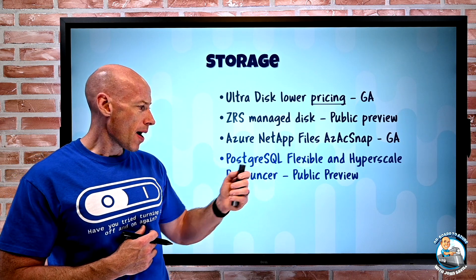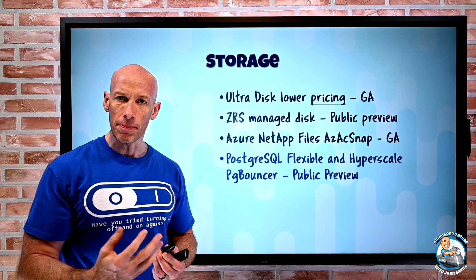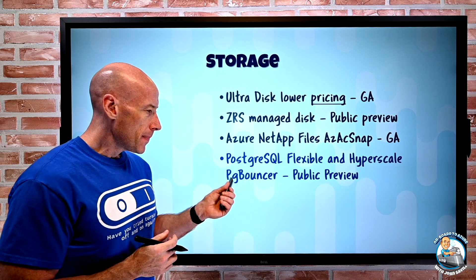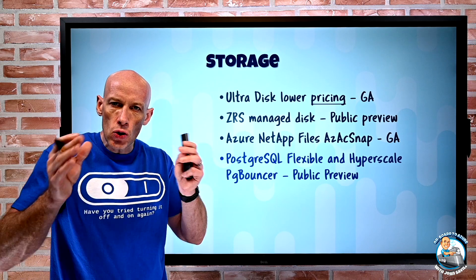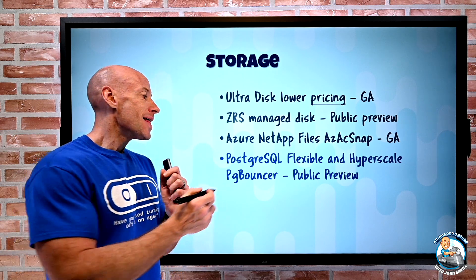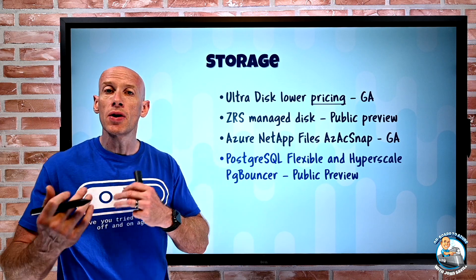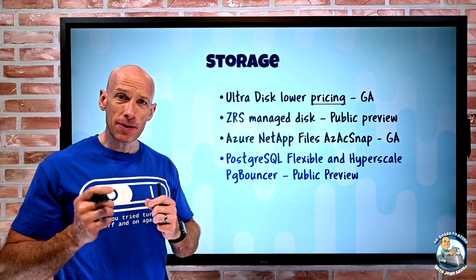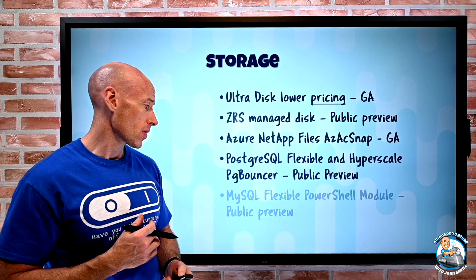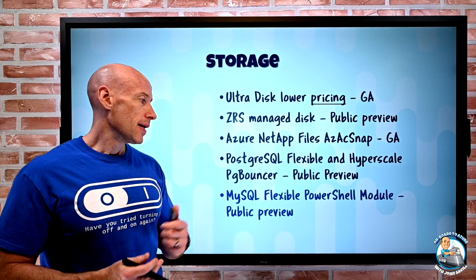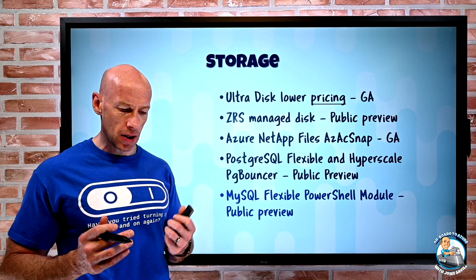Postgres SQL Flexible and Hyperscale have PG Bouncer in public preview. For these databases there's a certain number of connections allowed and then it maxes out. PG Bouncer is a managed offering — when I enable it for my server group I get a new connection string. Connecting to PG Bouncer, it then connects to either the Flexible or Hyperscale Postgres offering. There's still a finite number of connections but it queues them and connects as it can, letting me have more connections at once with PG Bouncer controlling access to the actual database. And MySQL Flexible now has a PowerShell module in public preview — az.mySQL — letting me do complete provisioning and management all from PowerShell.